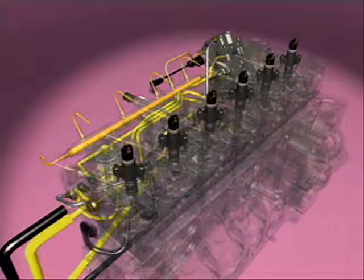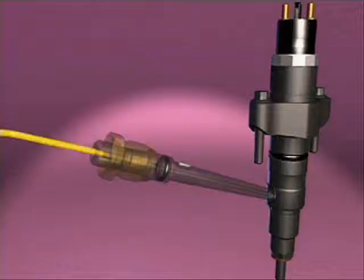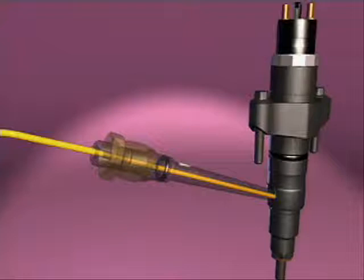The fuel rail is connected to each of the injectors by a fuel line and a high-pressure connector. Edge filters in the high-pressure connectors trap large particle debris. If an injector is replaced, a new high-pressure connector must be installed.